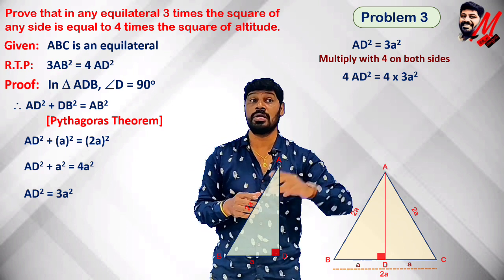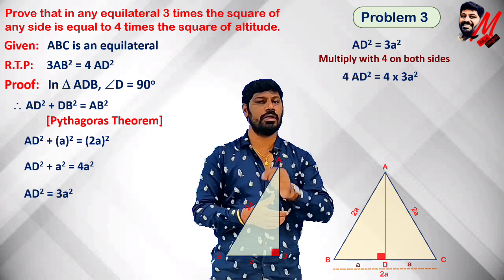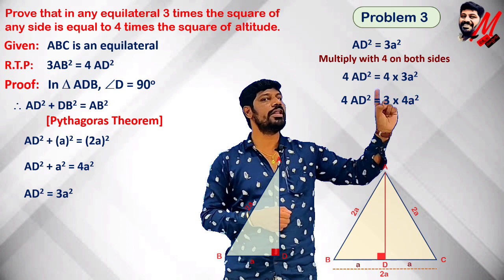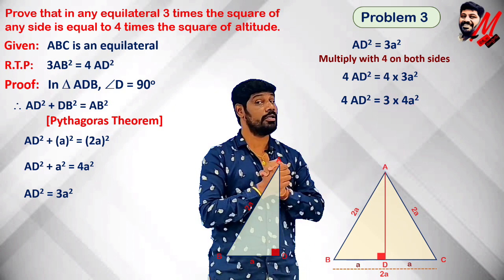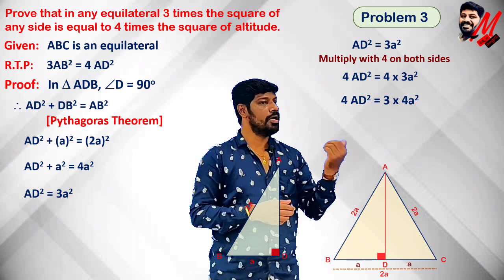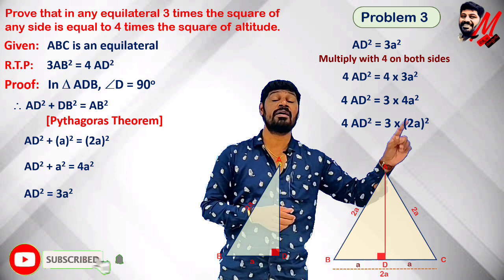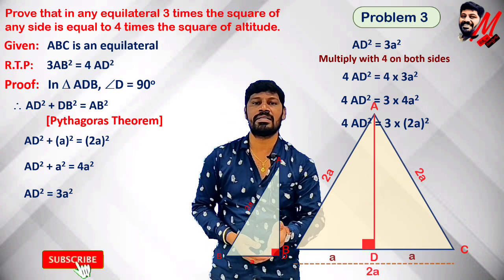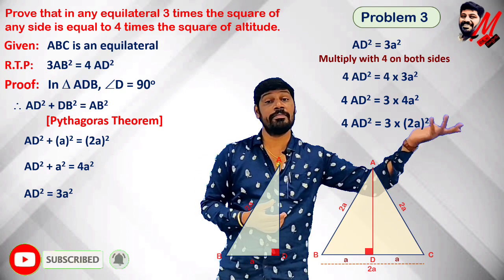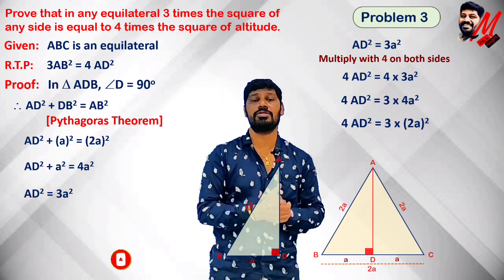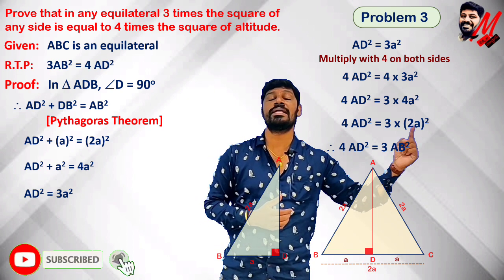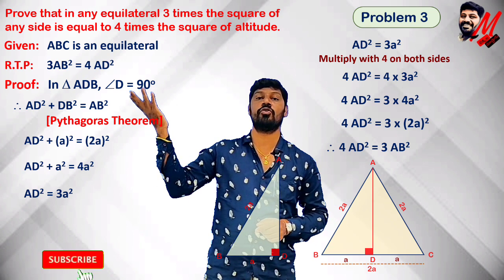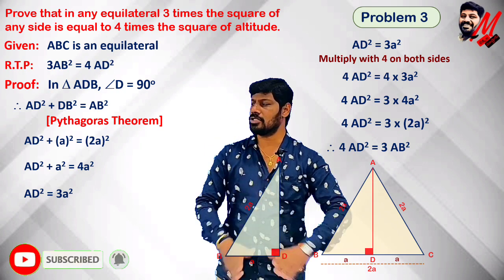So 4 times AD² equals 3 × 4a², which equals 3 × (2a)². Since 2a is nothing but the side of the equilateral triangle — we replace AB — we get 4×AD² = 3×AB². This is what we had to prove, and so 3×AB² = 4×AD² is proved.